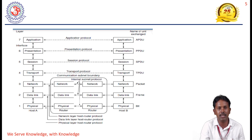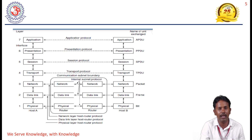From the physical layer, the data in the form of bits — zeros and ones — is passed to the data link layer, where the data is in the form of frames. For example, 'Hello World': 'Hello' is one frame and 'World' is another frame. From the data link layer, the next layer is the network layer, where the data is in the form of packets. Then from the network layer, the transport layer receives data in the form of segments.